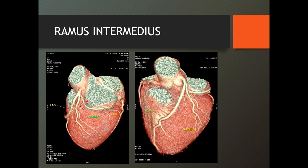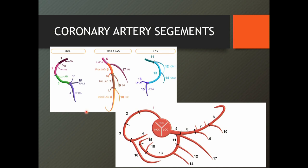Ramus intermedius comes between the LAD and circumflex as a prominent artery and then divides — it's the ramus intermedius. There are multiple segments of the arteries. Segments 1 through 4 are along the RCA; 5 through 8 are along the segments of the left main and the LAD; 9 and 10 are along the diagonals; 11, 12, 13 are along the circumflex; the rest are from the OM branches; and then the posterolateral branch and PDA give numbers 15 and 16.